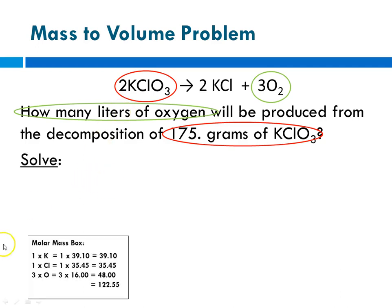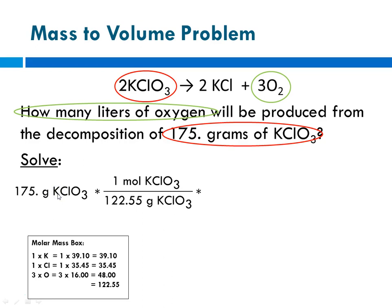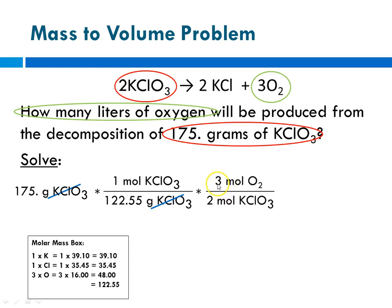Starting with the molar mass box: 1 times potassium is 39.10, 1 times chlorine is 35.45, and 3 oxygens are 48, so our total is 122.55. The first step is to start with our given — 175 grams of potassium chlorate — and use molar mass to go from grams to moles. Grams was in the numerator, so grams has to be in the denominator, and grams of potassium chlorate cancels out. Now we're at moles of potassium chlorate, so the next step is our mole ratio: 3 moles of oxygen for every 2 moles of potassium chlorate.